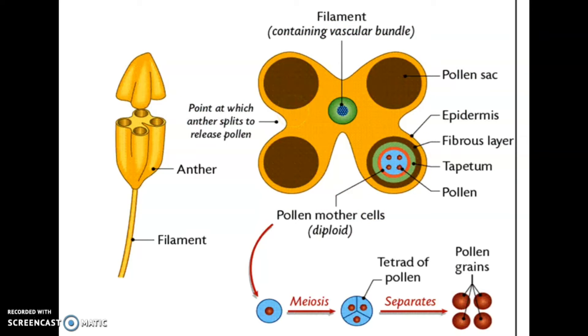The anther is four-sided: one, two, three, four. The anther is a tetragonal structure consisting of four microsporangia. One microsporangium here, second one, third one, and fourth one. So transverse section of anther shows four microsporangia. These four microsporangia are located at the corners, two in each lobe. In one lobe, one, two microsporangia, and another lobe, two microsporangia. So in total, how many microsporangia are there? One, two, three, four.